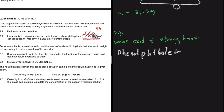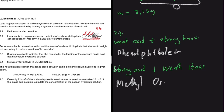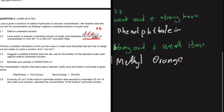When you have a strong acid and a weak base, you use methyl orange. When you have a strong acid and a strong base, or a weak acid and a weak base, you use bromothymol blue. So: neutral pH → bromothymol blue; acidic pH → methyl orange; basic pH → phenolphthalein.